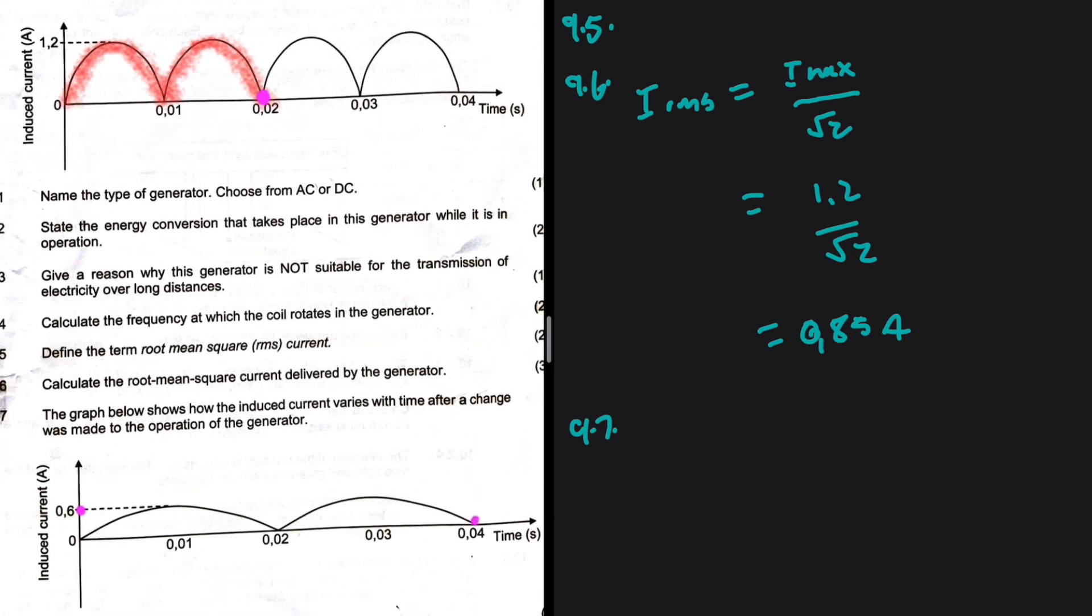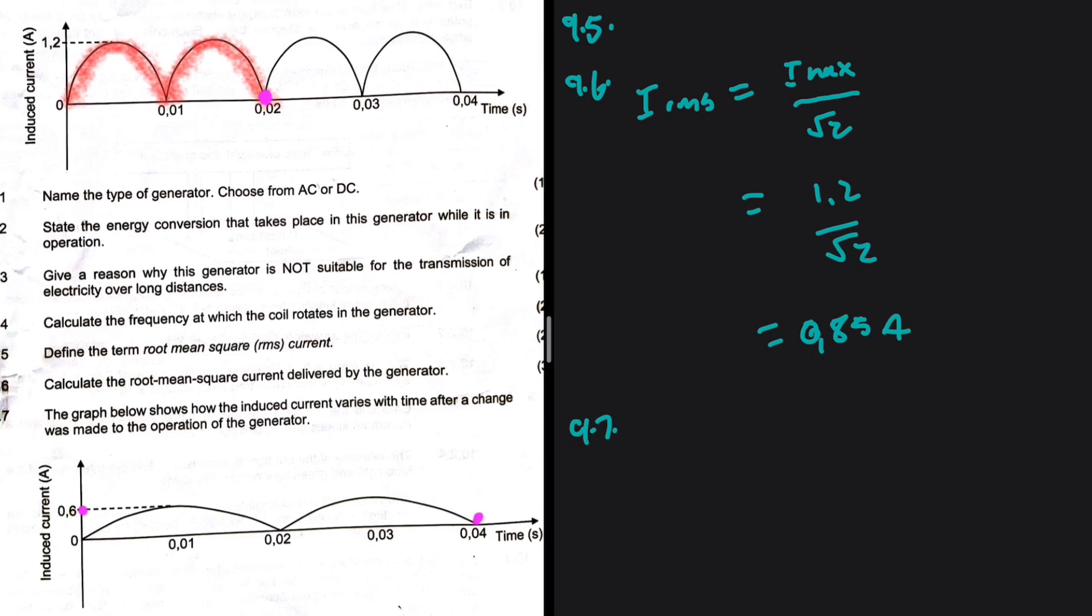I_max is no longer 1.2 but it is now 0.6. And then the period is no longer 0.02, it is now 0.04. So fully describe the change that was made. Okay, let's do this: I'm going to comment on the period. I want you guys in the comment section to comment on the current that is induced.